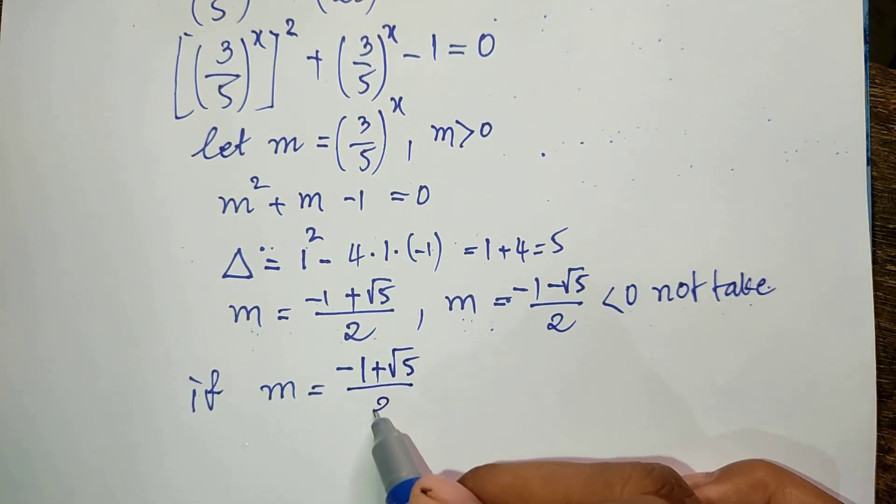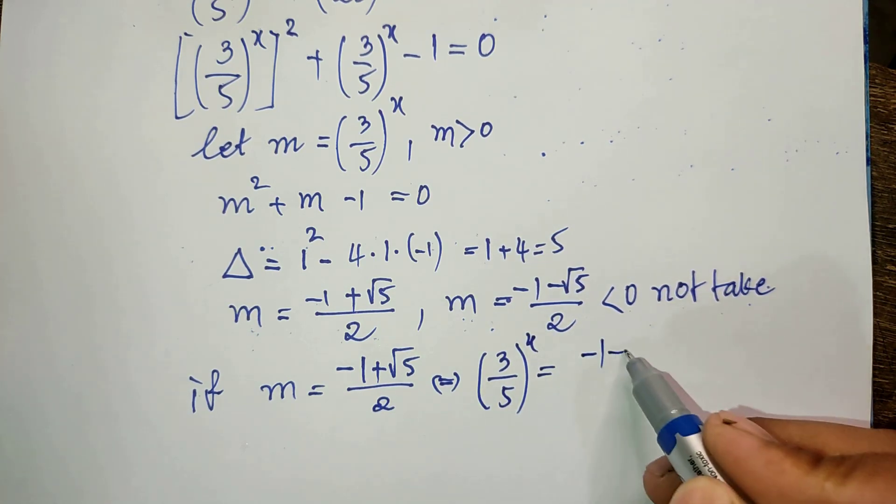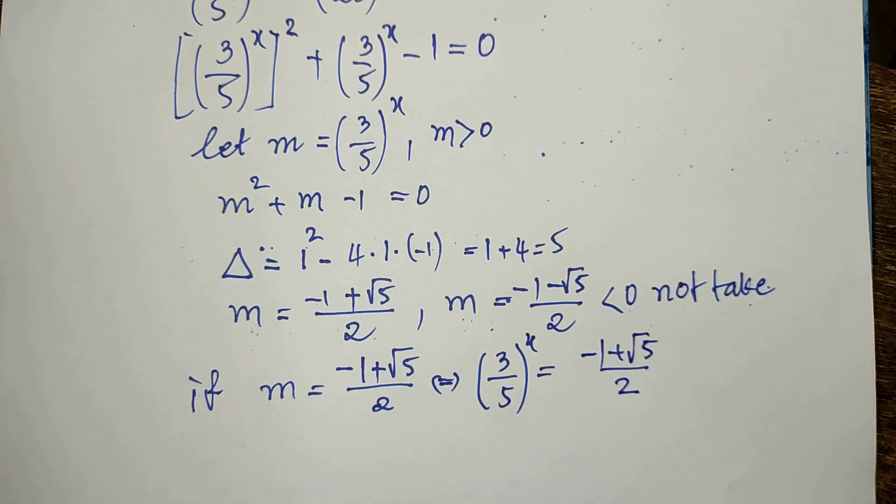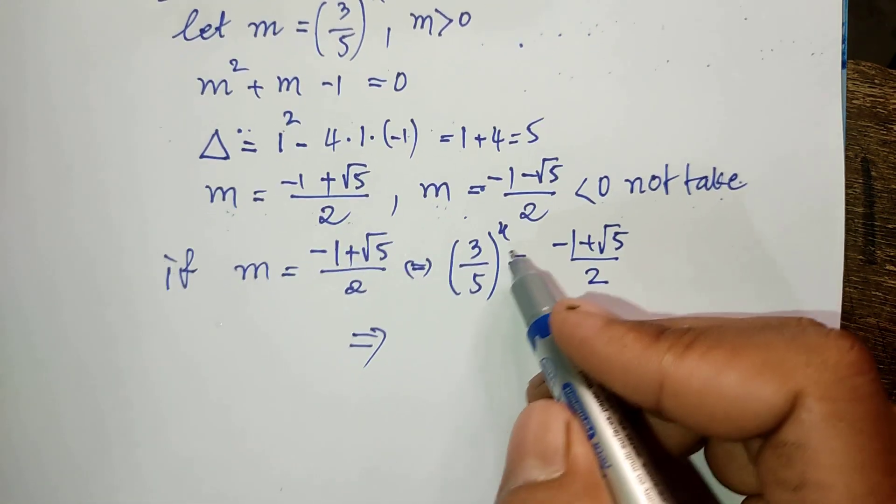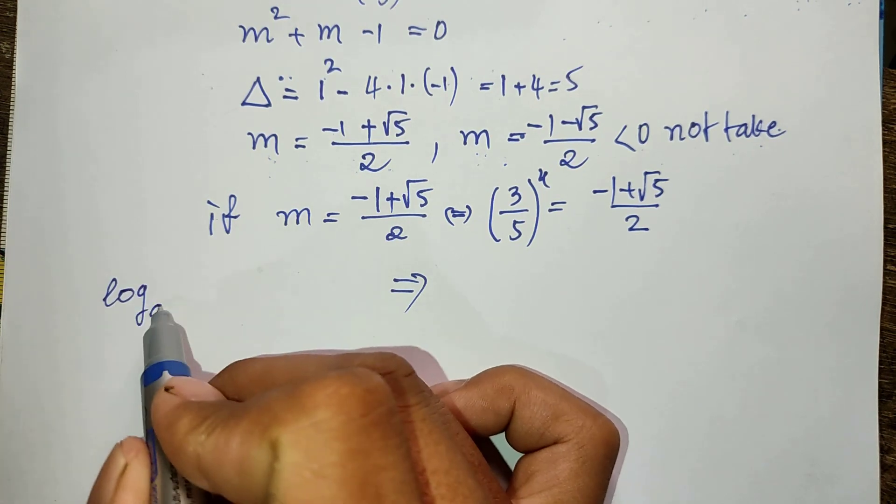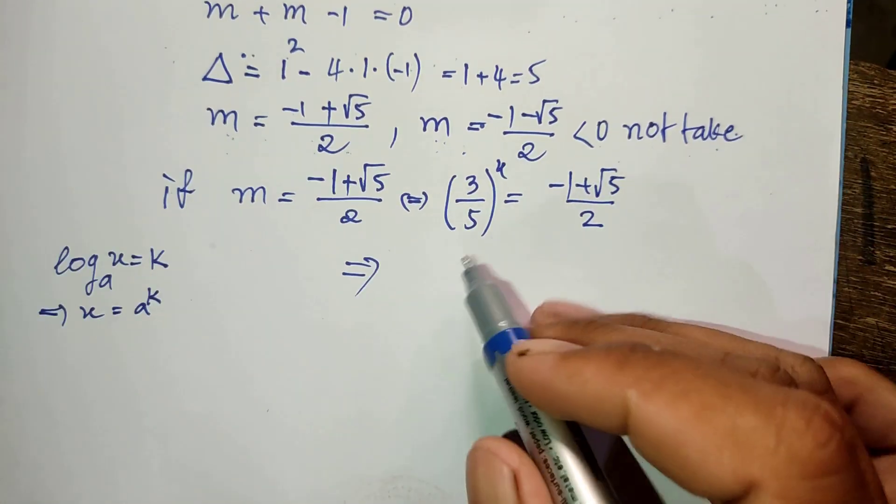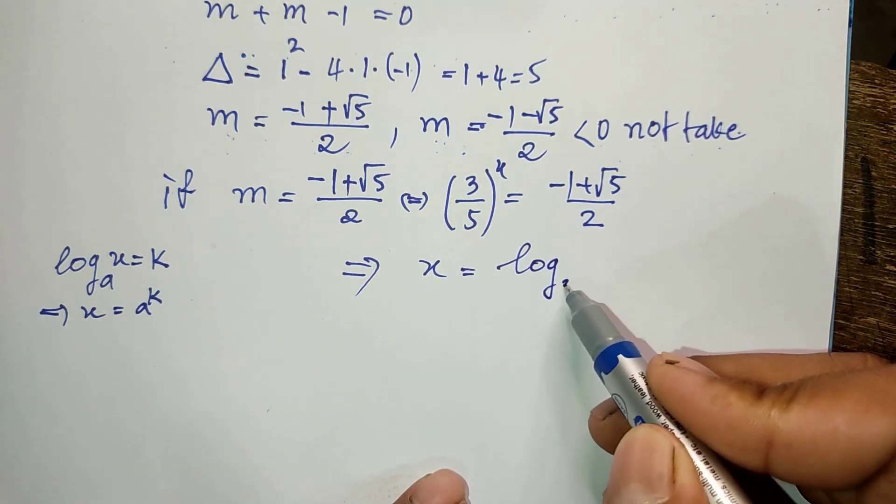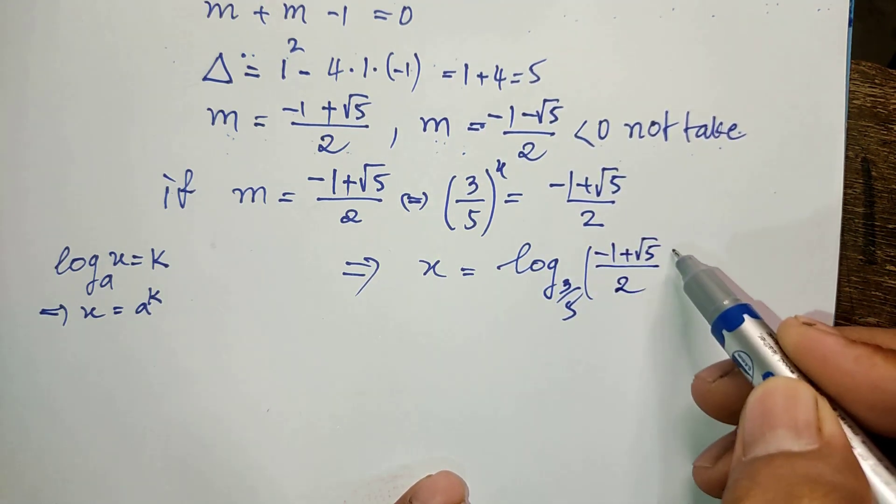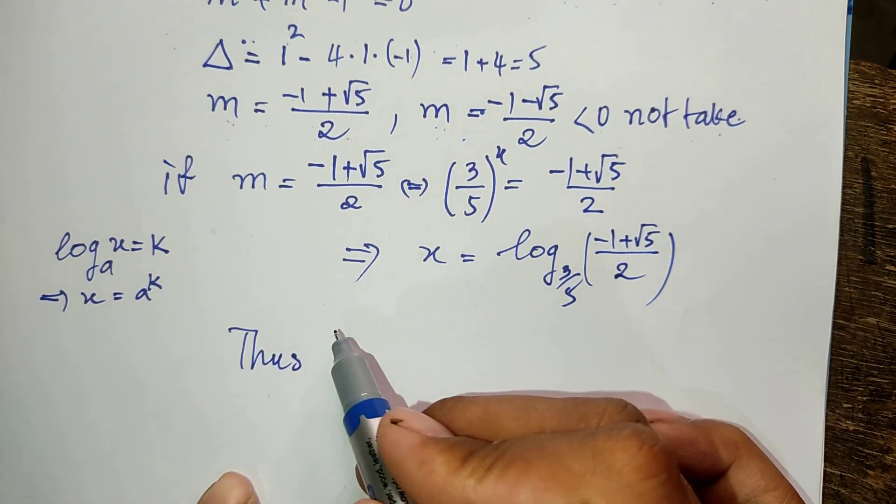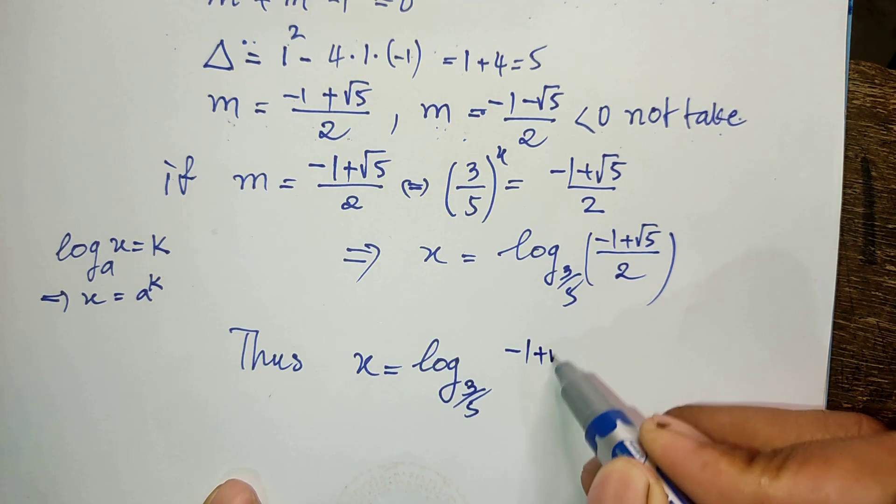So if m = (-1 + √5)/2, we get (3/5)^x = (-1 + √5)/2. Now we can find the value of x. We use the rule that if log base a of h equals k, then h = a^k. So we get x equals log base (3/5) of ((-1 + √5)/2). This is our solution.